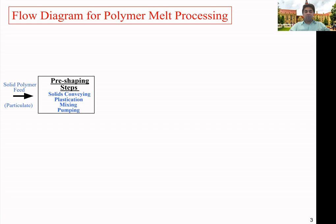The mixing zone and pumping zone are combined in most applications. We mix the material to produce a homogeneous polymer melt — homogeneous in both composition and temperature — and then pump that melt into the die. These are the pre-shaping steps: solids conveying, plastication or melting, and mixing and pumping.